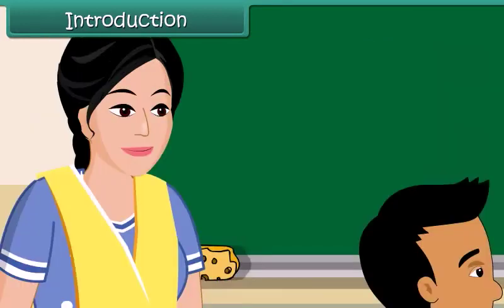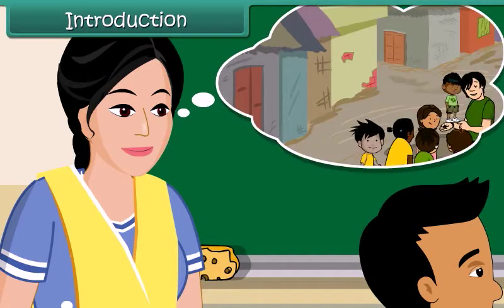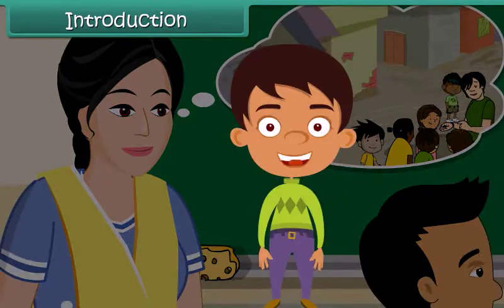Ramesh's mother knows the reason for his absence. They live in a slum area, and Ramesh falls ill frequently because of his unhealthy surroundings. However, Ramesh's mother cannot understand how she can improve their surroundings. Let us understand how we can keep our surroundings and ourselves clean.